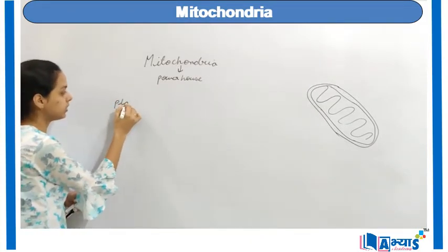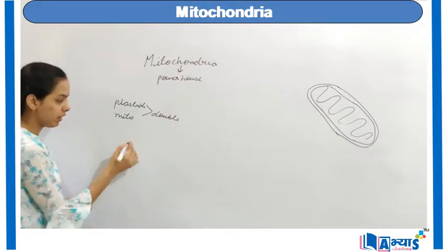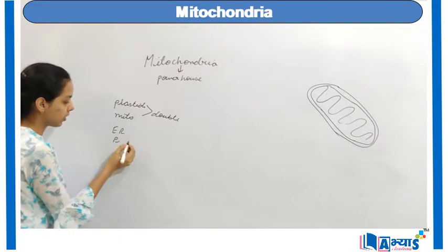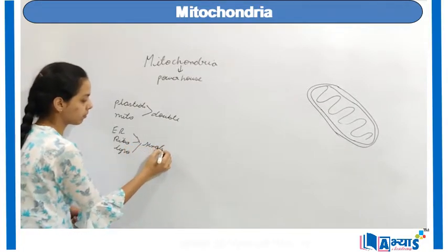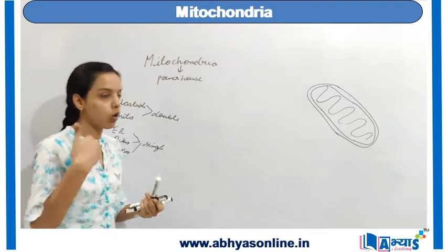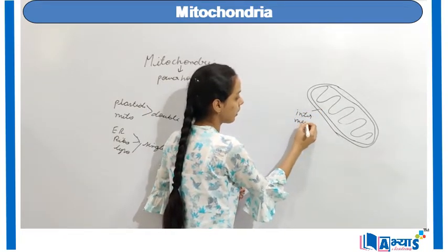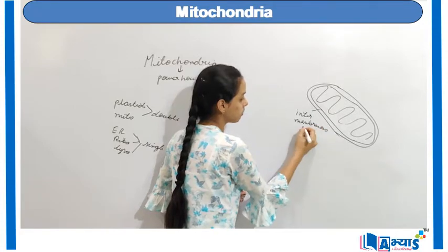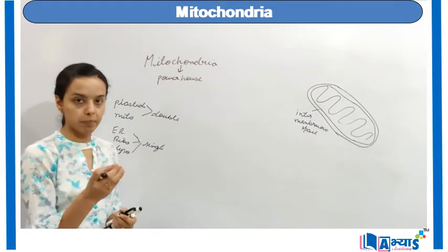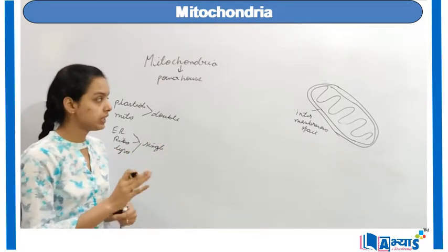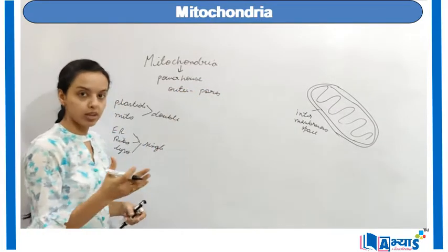Plastids and mitochondria have a double membrane, whereas the endoplasmic reticulum, ribosomes, and lysosomes all have a single membrane. Since mitochondria has a double membrane, it has an outer membrane and an inner membrane. The space between these two membranes is known as the intermembranous space. The outer membrane has pores, meaning it is porous — it has holes in it.